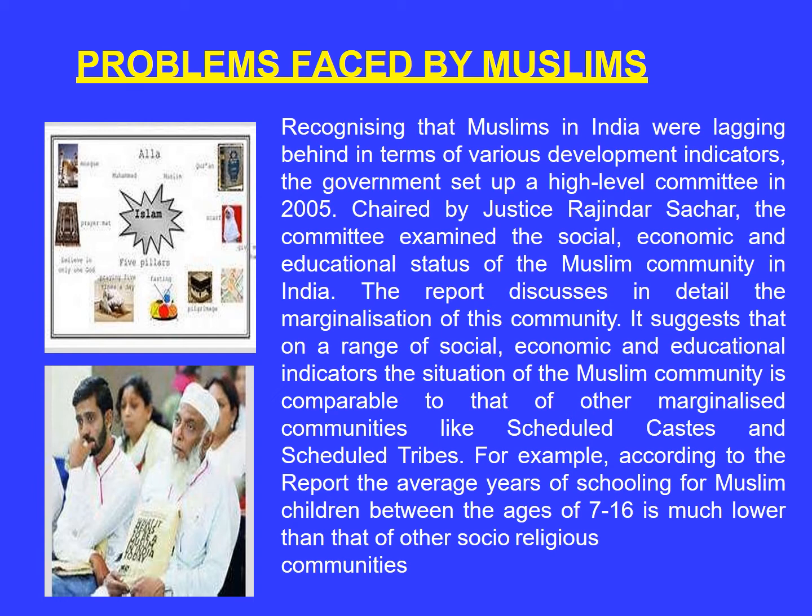The Sachar Committee report suggests that on a range of social, economic, and educational indicators, the situation of the Muslim community is comparable to that of the Scheduled Castes and Scheduled Tribes. For example, according to the report, the average years of schooling for Muslim children between ages 7 to 16 is much lower than that of other social and religious communities.